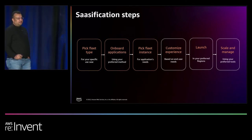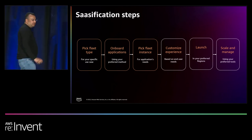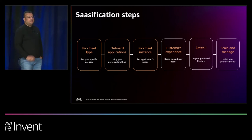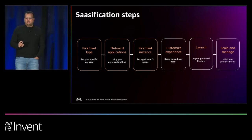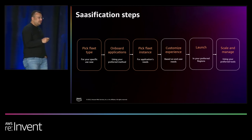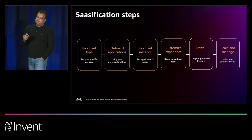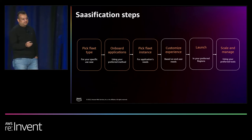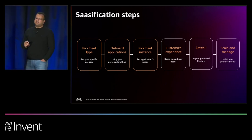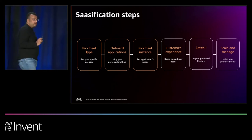Let's pick up the conversation from the SaaSification steps we were covering earlier. We talked about picking the fleet type, onboarding applications, and picking the fleet instance — where Adam shared how they're leveraging graphics instances. One of the really interesting things in Adam's presentation was how they're able to completely customize the experience and make it their own. It's really important that when you deliver the SaaS version of your applications, the experience is your brand connecting with end users. We'll also cover how you launch in your preferred region and what tools are available to scale and manage your deployments worldwide.